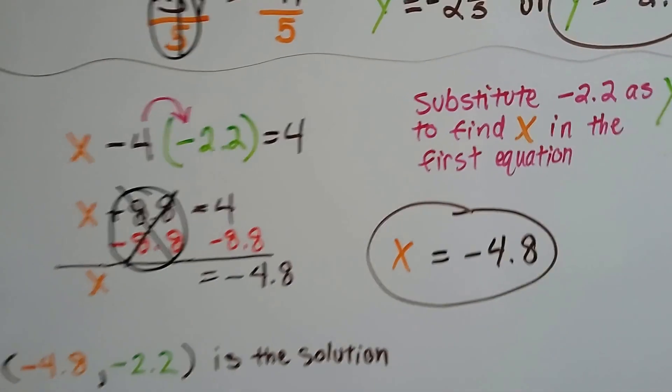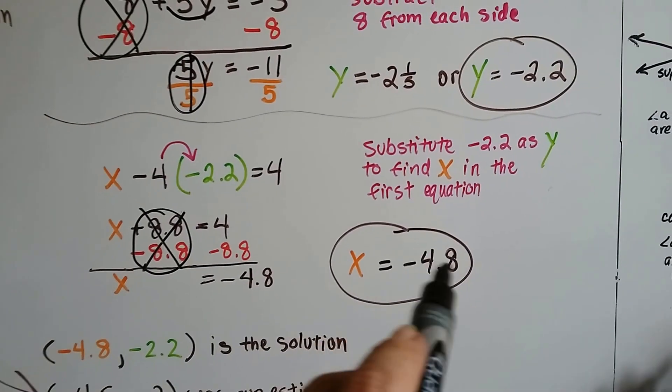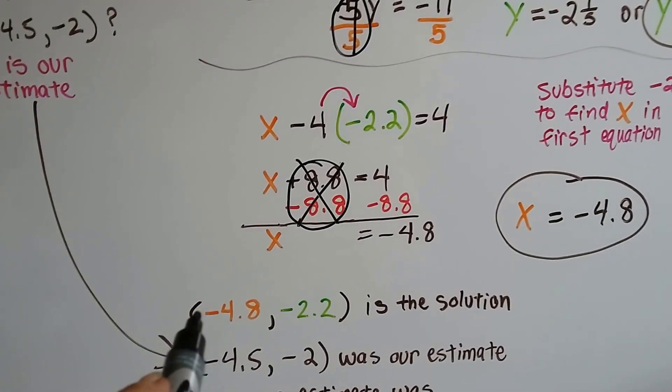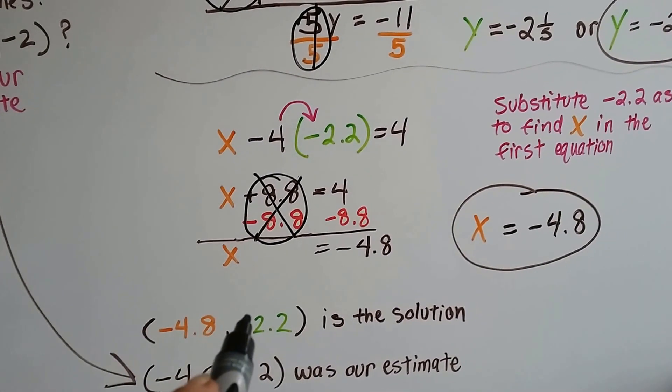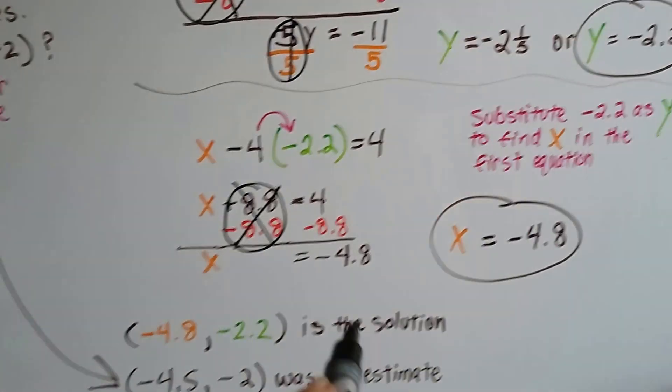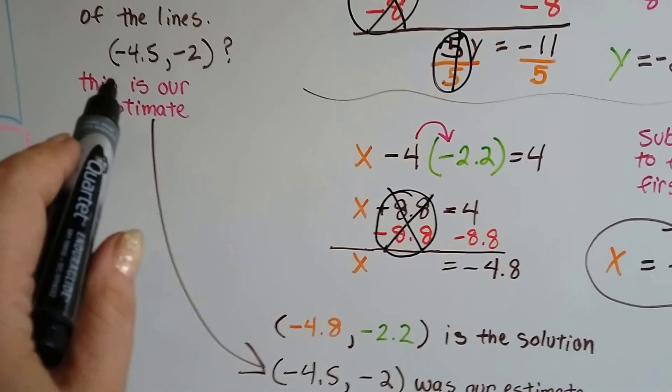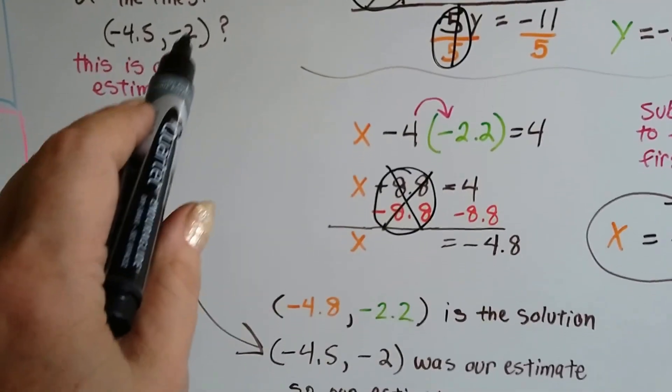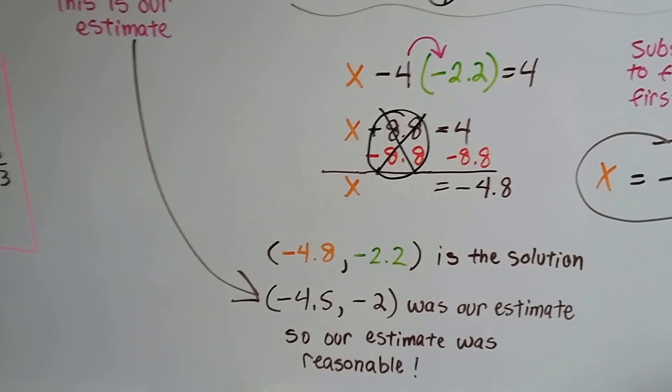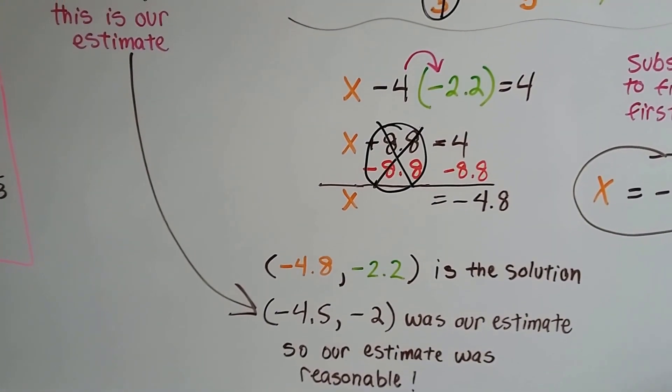Now we have our ordered pair. We've got the negative 4.8 for x. Negative 4.8 comma negative 2.2. That's the actual solution when we do it algebraically. Look at what our estimate was. Negative 4.5 negative 2. That was pretty close. That's pretty reasonable, isn't it?